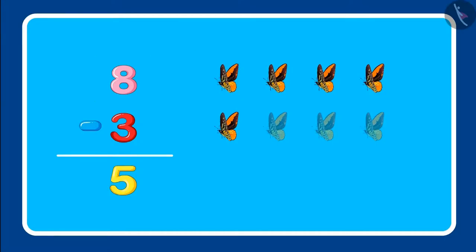So, children, from eight butterflies, three butterflies flew away. So, five butterflies were left. You have understood, right? Come on. Now, let's go back to Pinky and her mother in the garden.